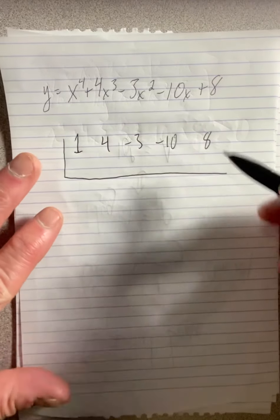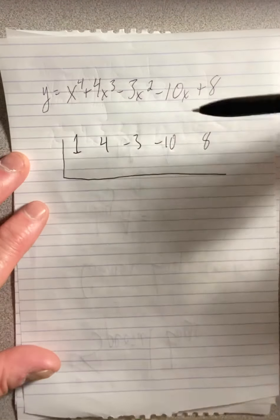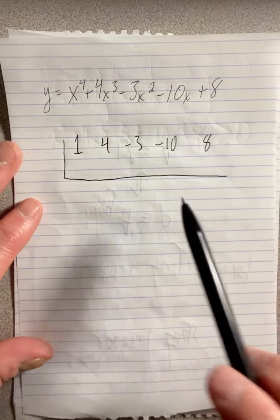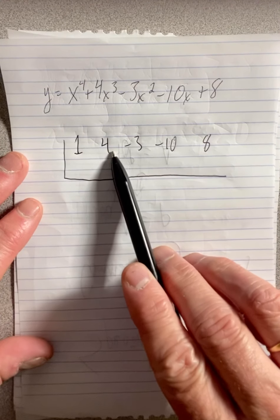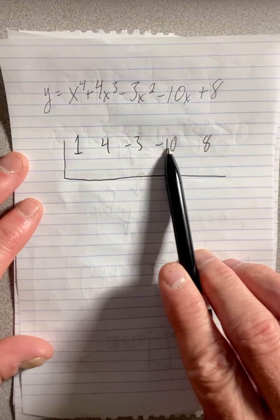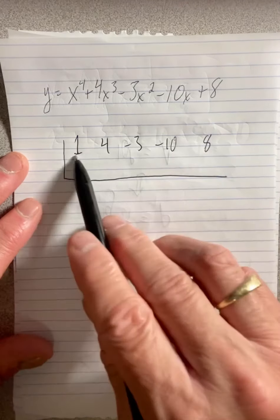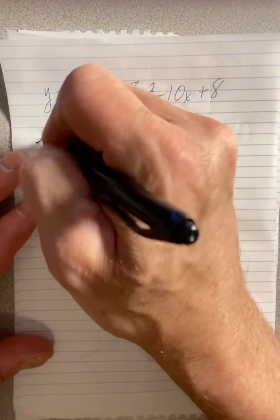is synthetic division. But wait a minute, we have our witchcraft. These are the coefficients. If the coefficients add to zero, then we know one is a root. One and four is five. Five and a negative three is two. Two and a negative ten is a negative eight. Plus eight is zero. Whenever these add up to zero, you know one is a root.